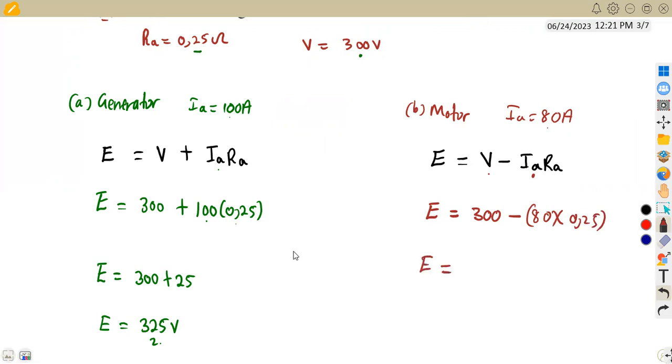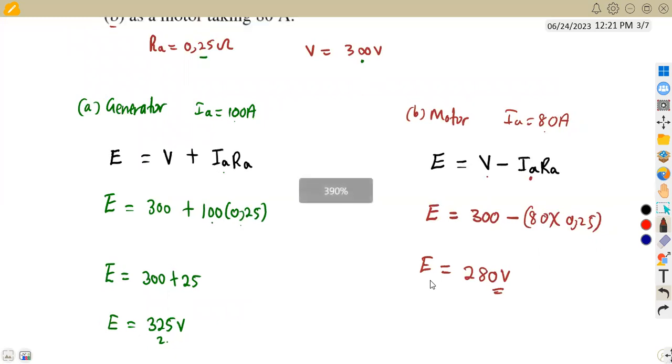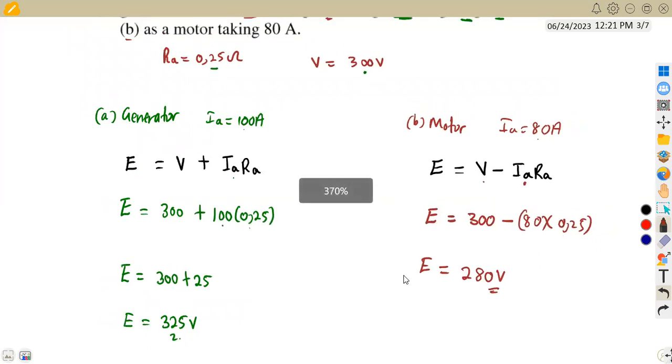So just like the previous part, we can separate this part or combine everything. We are going to obtain at the end 280 volts in this case.